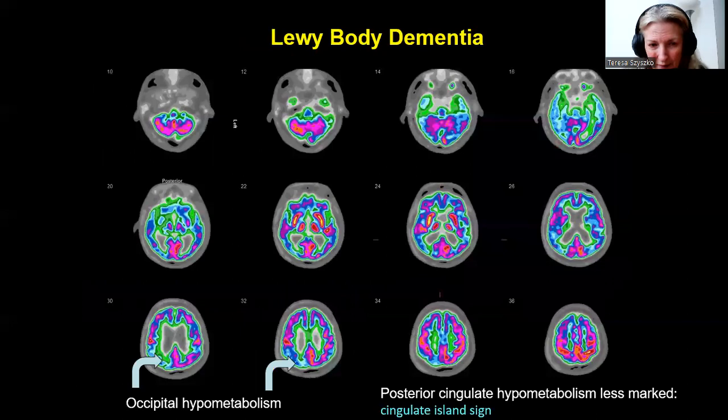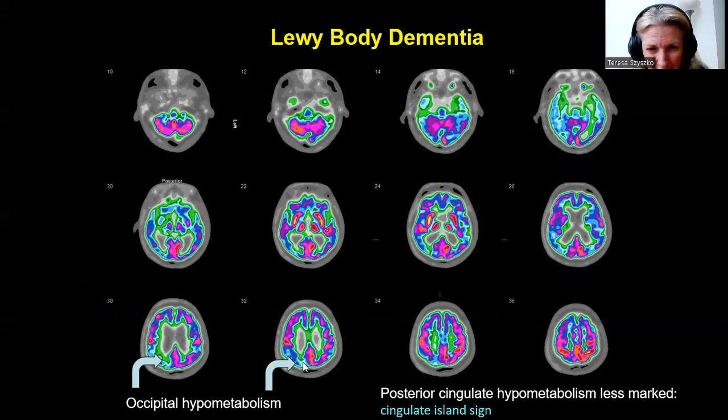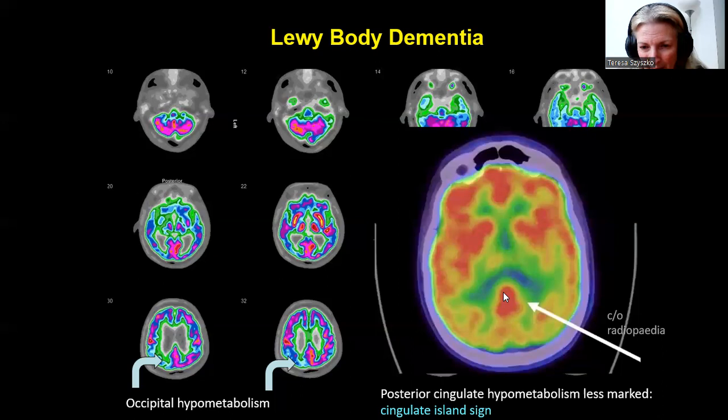Here we have an example of occipital hypometabolism. Systematically, we can see quite a large area — it's relatively asymmetrical — of parietal decreased uptake which extends well into the occipital lobe, and also affects the temporal lobe quite extensively. I want to highlight the posterior cingulate island sign, where you've got quite focal uptake in the cingulate but the hypometabolism is less marked. This occurs with Lewy body dementia.